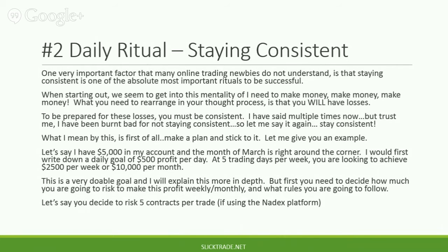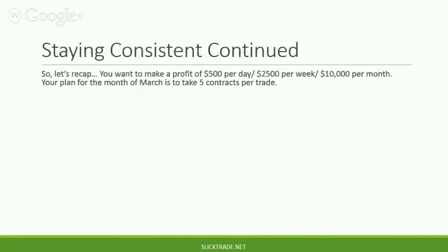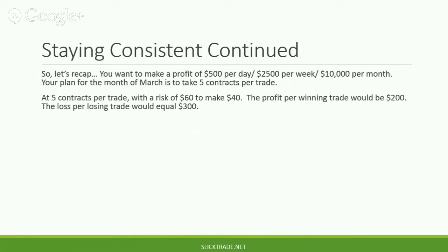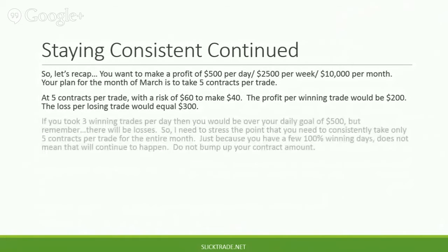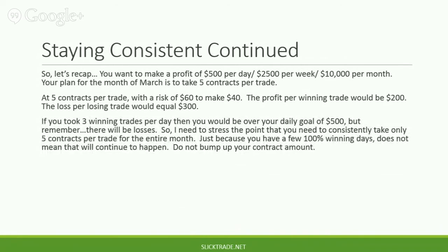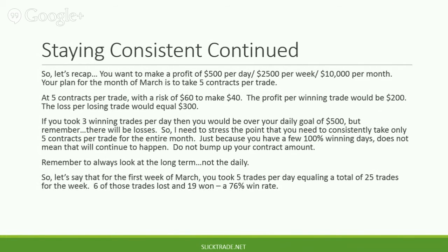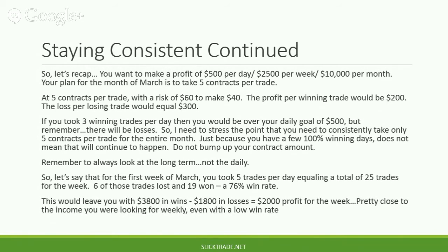Let's say you decide to risk five contracts per trade — this is a Nadex platform example. So let's recap: you want to make a profit of $500 per day, $2,500 per week, $10,000 per month overall. Your plan for the month of March is to take five contracts per trade. At five contracts per trade with a risk of $60 to make $40, the profit per winning trade would be $200 and the loss per losing trade would be $300. If you took three winning trades per day, then you would be over your daily goal of $500. But remember, there will be losses, so you need to consistently take only five contracts per trade for the entire month.